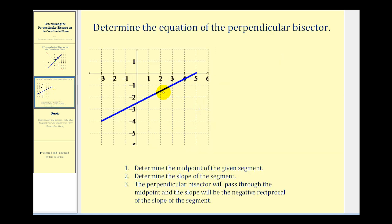We want to determine the equation of the perpendicular bisector of the given segment. Let's start by determining the coordinates of the endpoints. This point here would be negative three, negative four. This point here would be five, zero.